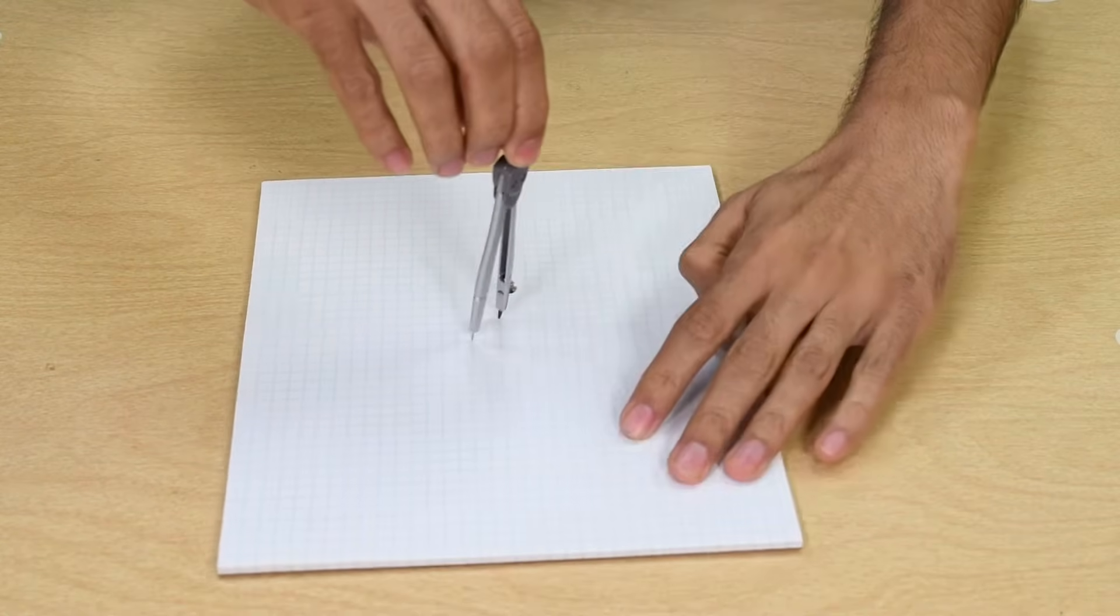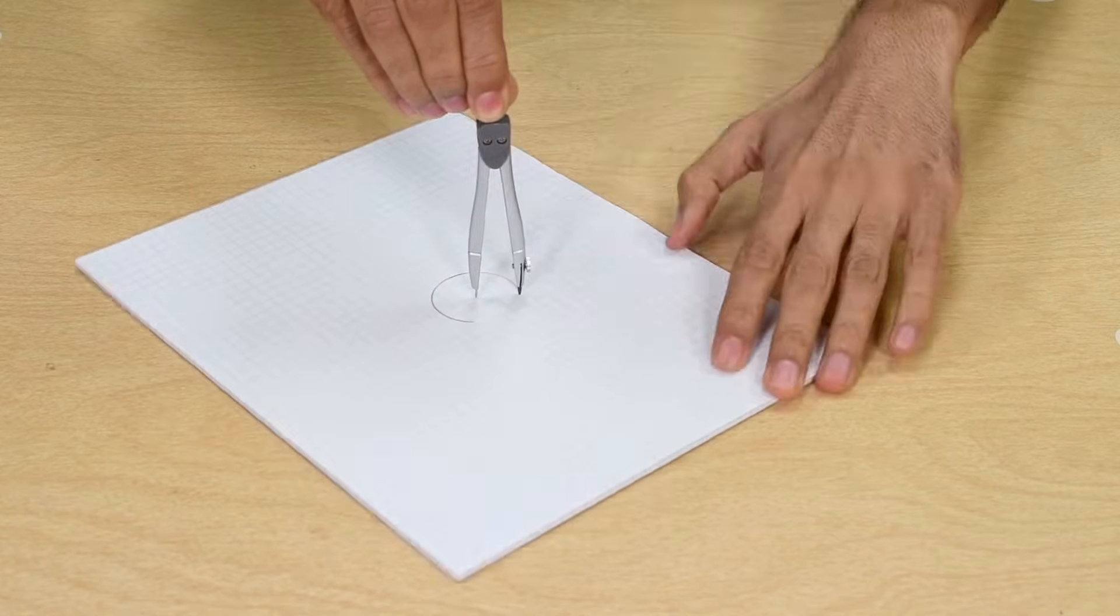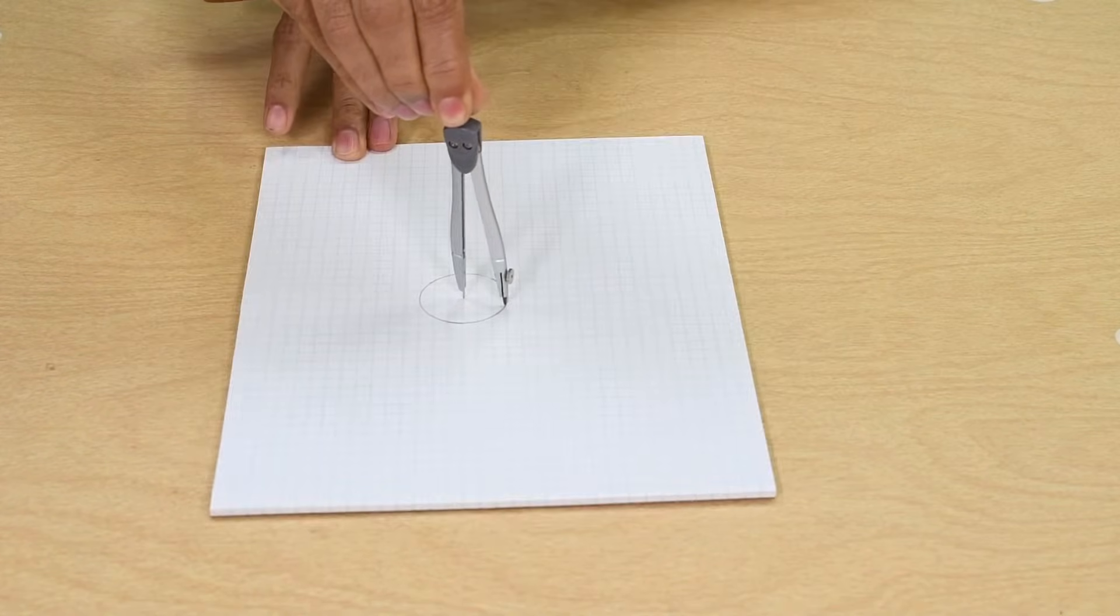A trick that we use at school for beginners is to rotate the paper and hold the compass still. This is much easier if you are using papers and not a notebook.